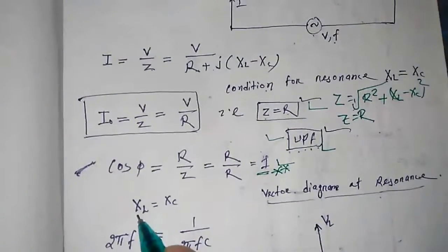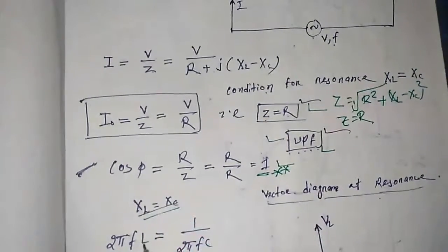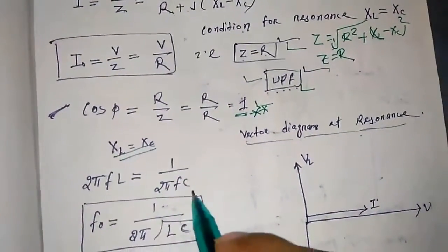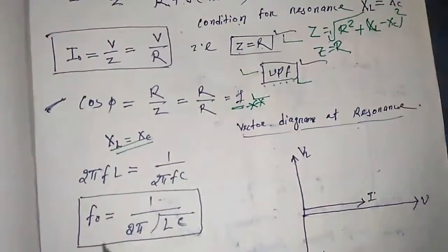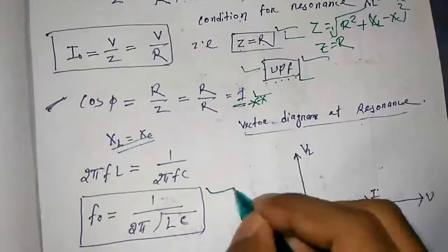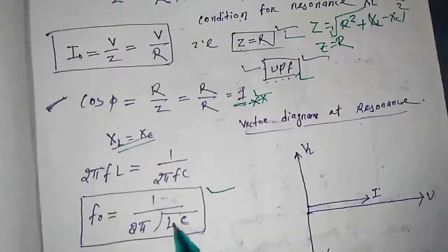So this condition, as you know, XL is equal to XC. So XL is 2πFL that is equal to 1 by 2πFC. And this F is nothing but F0, that is the resonance frequency, that is 1 upon 2π root over LC.